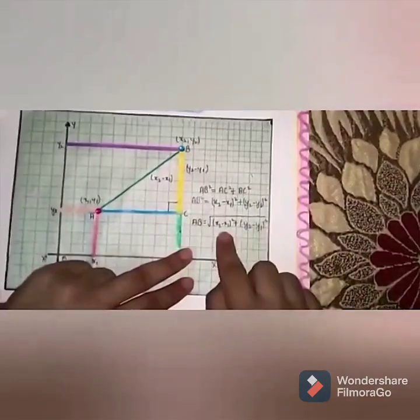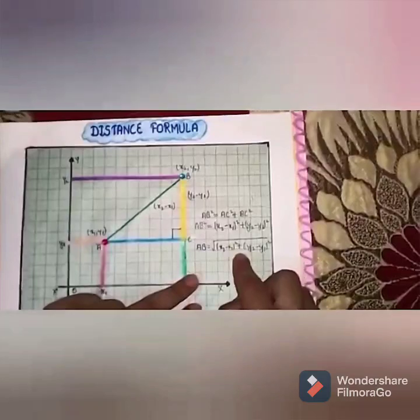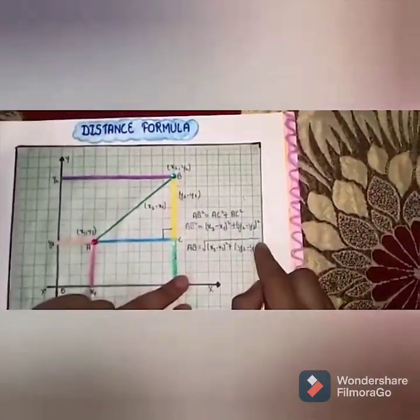Distance equation becomes square root of X2 minus X1 whole square plus Y2 minus Y1 whole square.